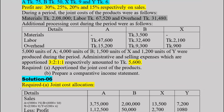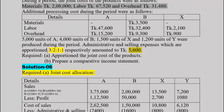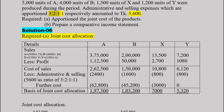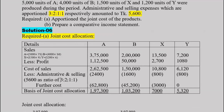Administrative and selling expense is 5,600, allocated in the ratio of 3:2:1:1 — giving proportions for products A, B, X, and Y respectively. The LED indicative ratio shown is 3, 2, 5, 4, 2, 6.